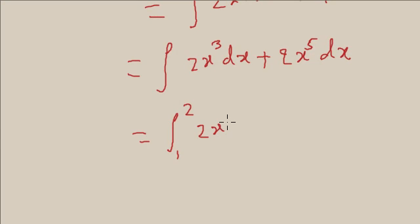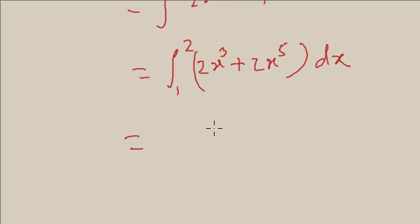And twice x cube plus twice x to the power 5 dx. So if you find out the integral value of this, you will get the result. Now the integration of this equation is twice x to the power 4 by 4 plus twice x to the power 6 by 6.